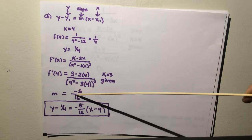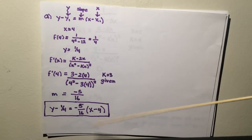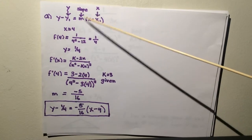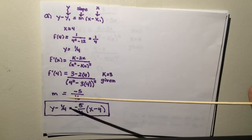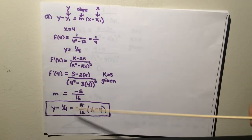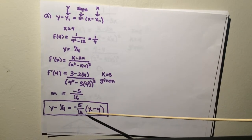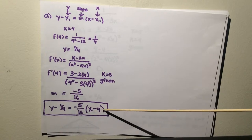Then you'll just plug everything you've got back in. You plug in your y, which is 1 fourth, your slope, which is negative 5 over 16, and 4 for your x.